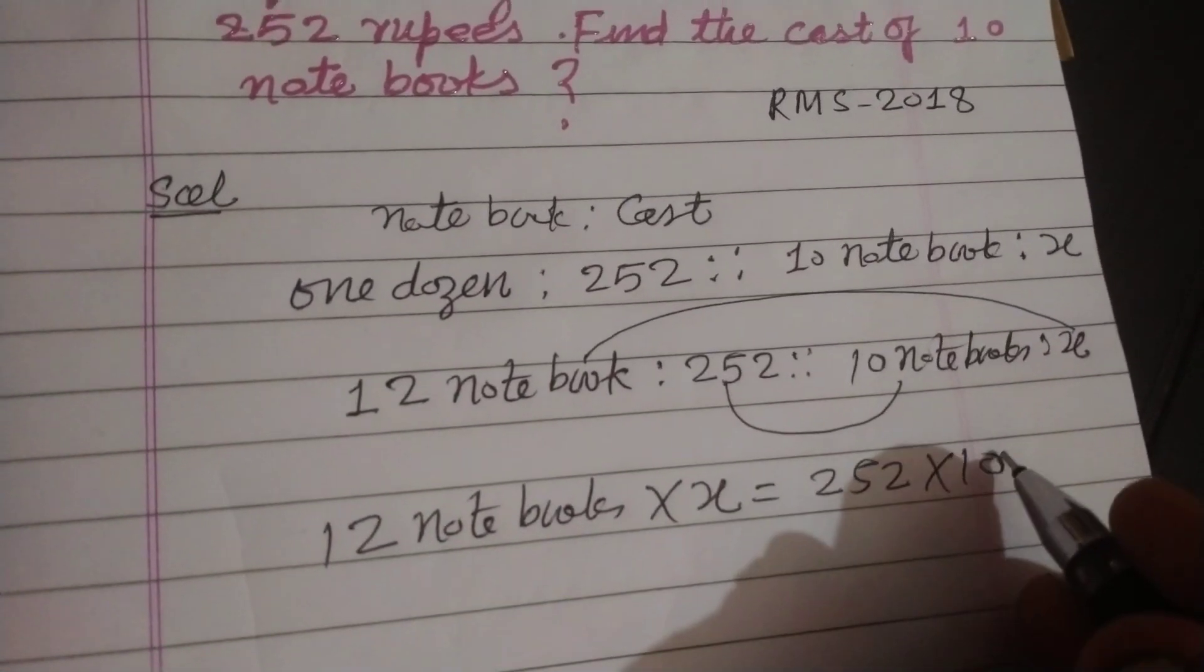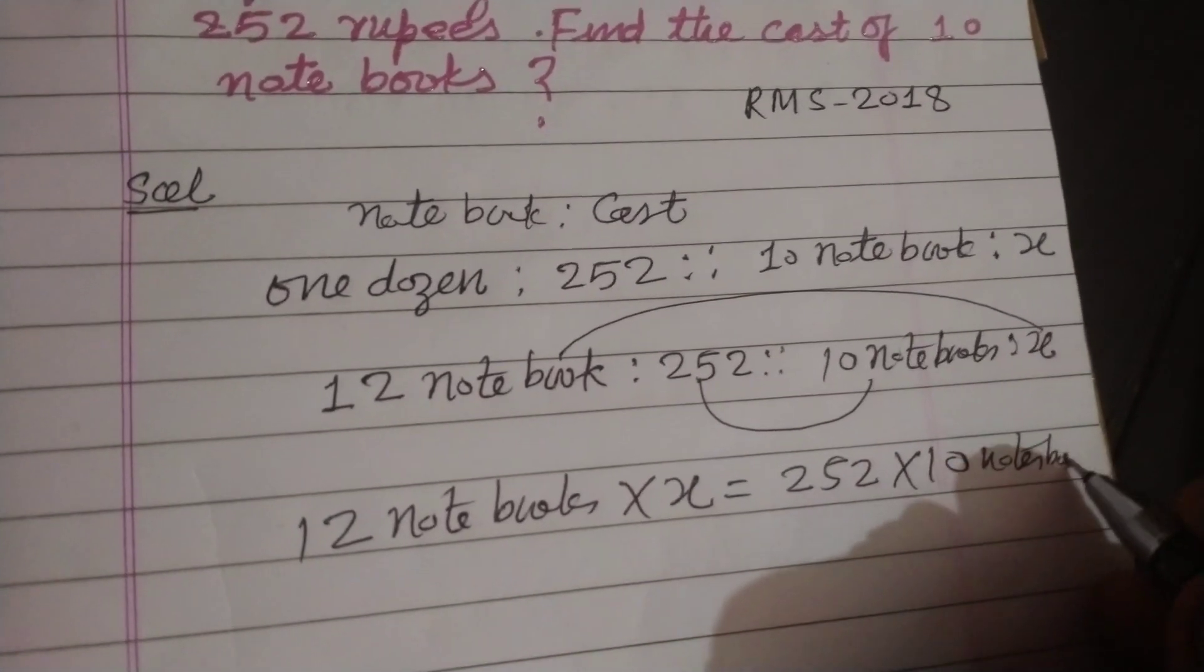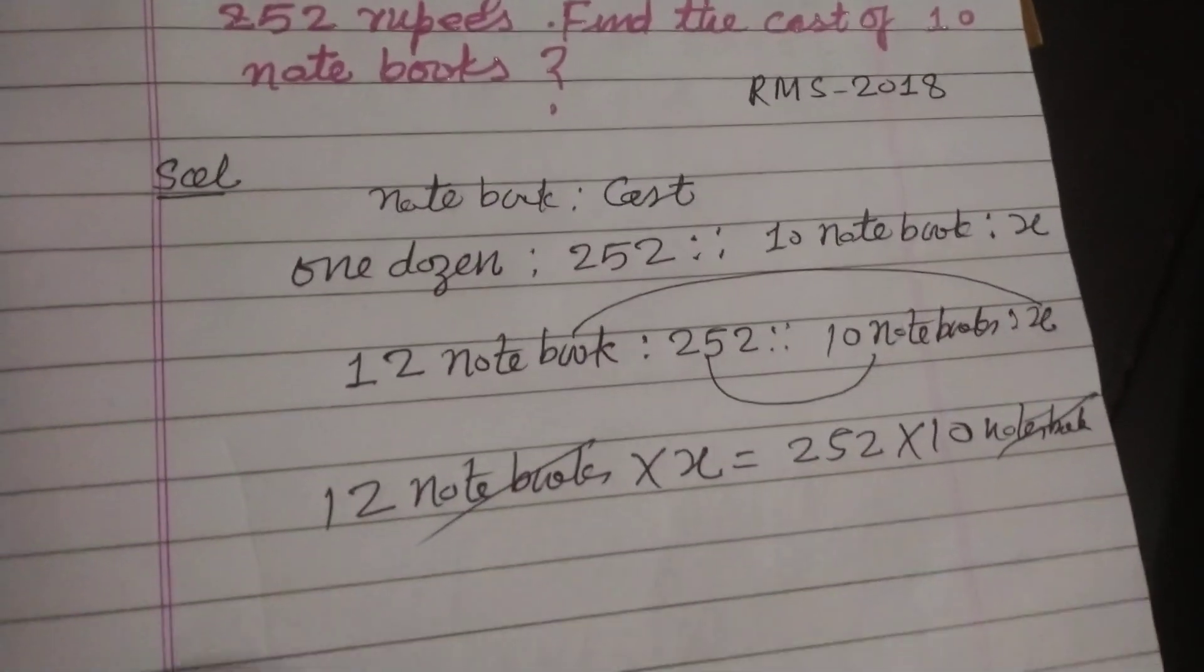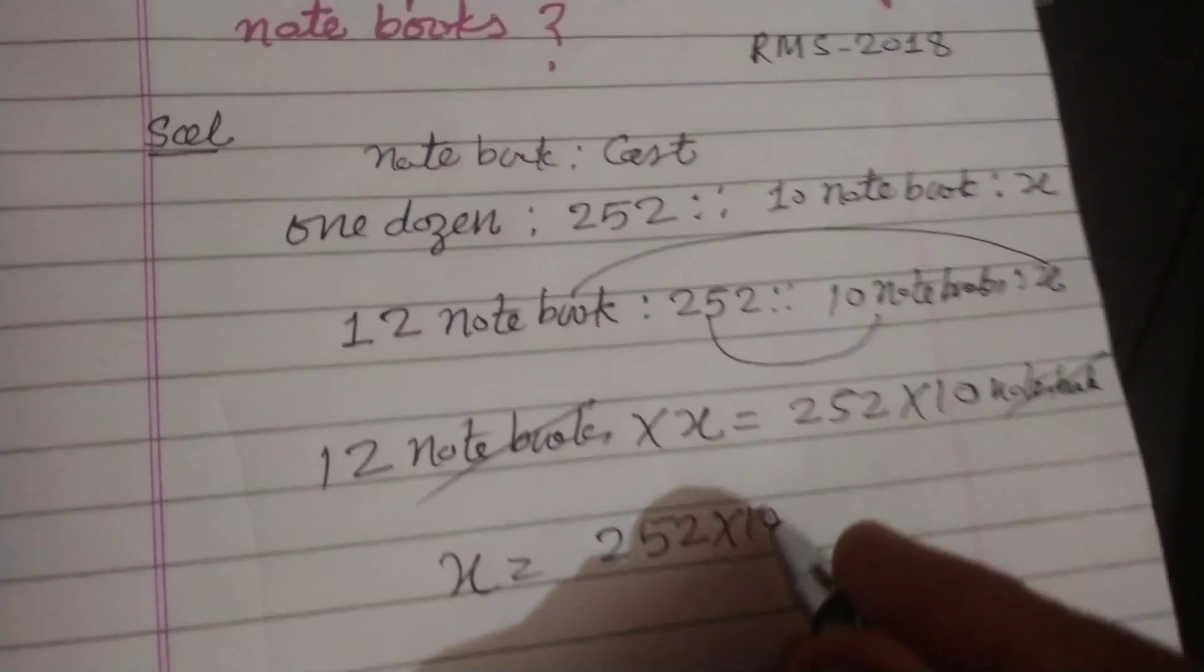So here 10 notebooks, notebooks and silk. We got x equal to 252 into 10 upon 12.